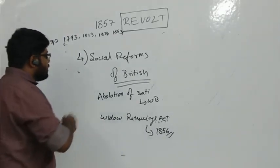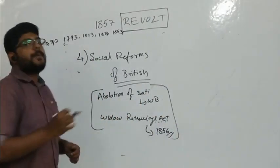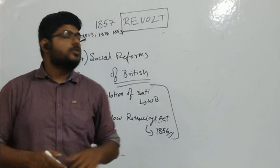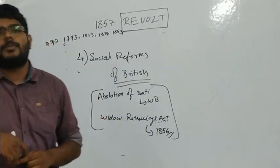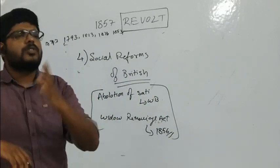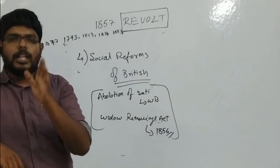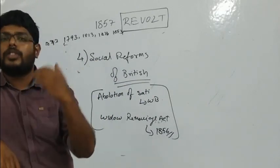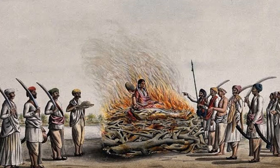These were positive social reforms, but even so, people were affected. Sati Sahagamanam — where a wife was forcefully cremated on the funeral pyre of her dead husband — was a very old Indian cultural practice. When William Bentinck abolished it, most upper-class people — Brahmins, Kshatriyas, and Vaishyas — who followed this tradition were completely against the British.